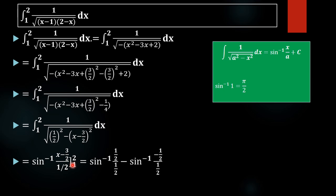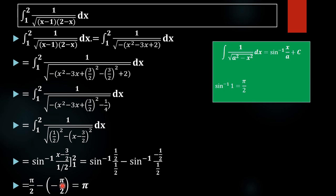On applying the upper limit 2: (2 minus 3 by 2) divided by (1 by 2) equals (1 by 2) divided by (1 by 2) equals 1. On applying the lower limit 1: (1 minus 3 by 2) divided by (1 by 2) equals (minus 1 by 2) divided by (1 by 2) equals minus 1. So we get sin inverse of 1 minus sin inverse of minus 1, which equals pi by 2 minus (minus pi by 2), giving us pi as our result of integration.